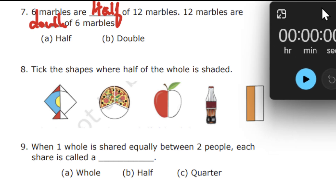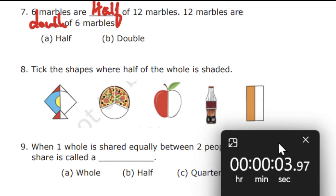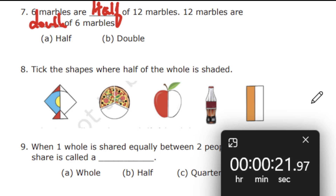Question number 8: tick the shape where half of the whole is shaded. You need to tick the shapes — note it's more than one shape — where half of the whole is shaded. 30 seconds is over.